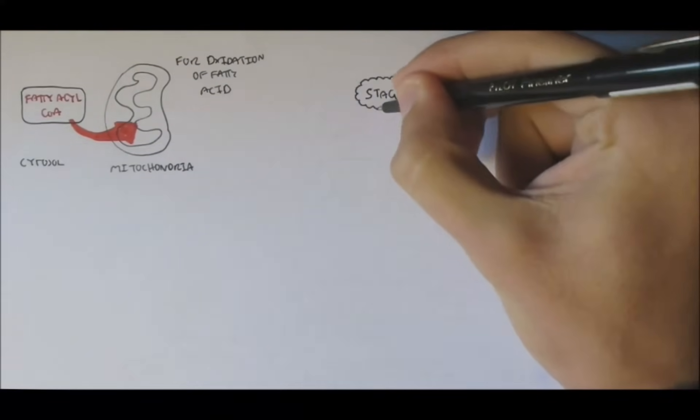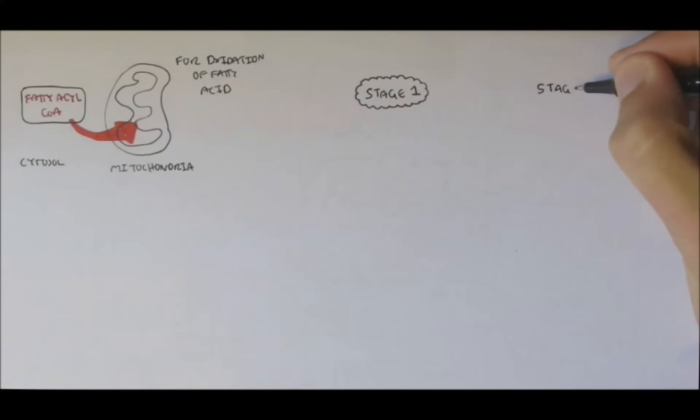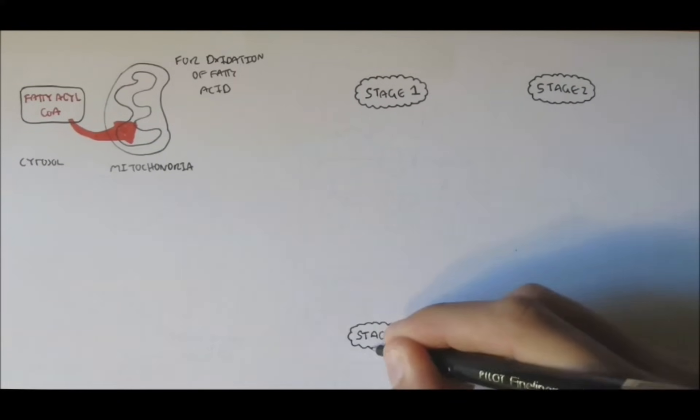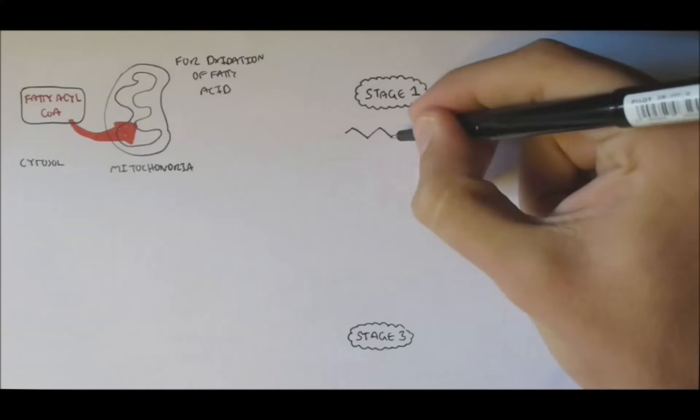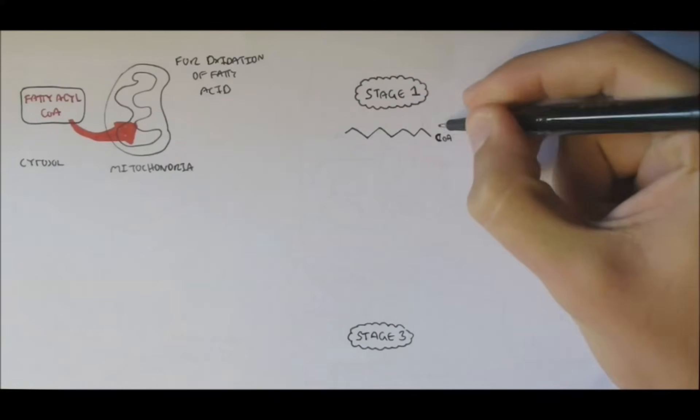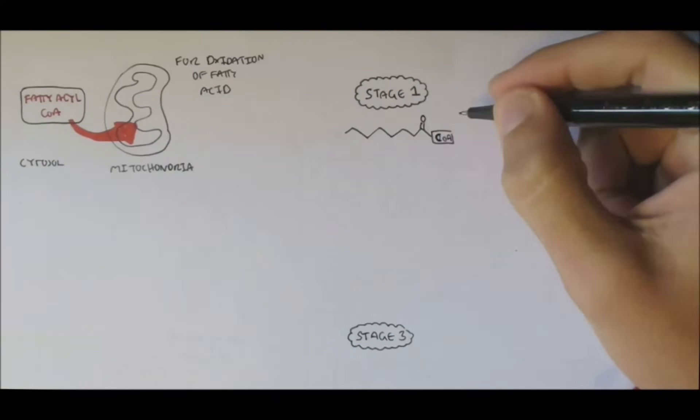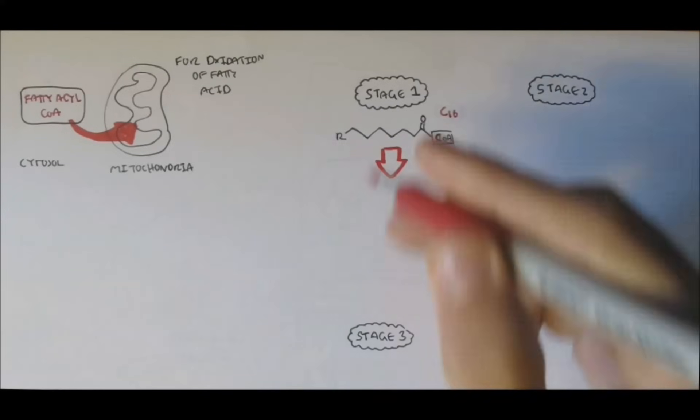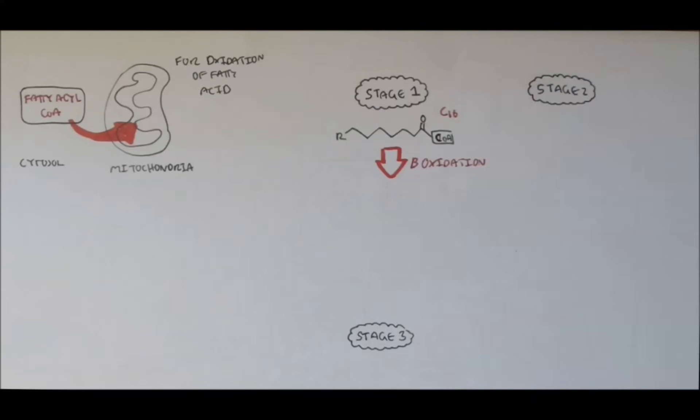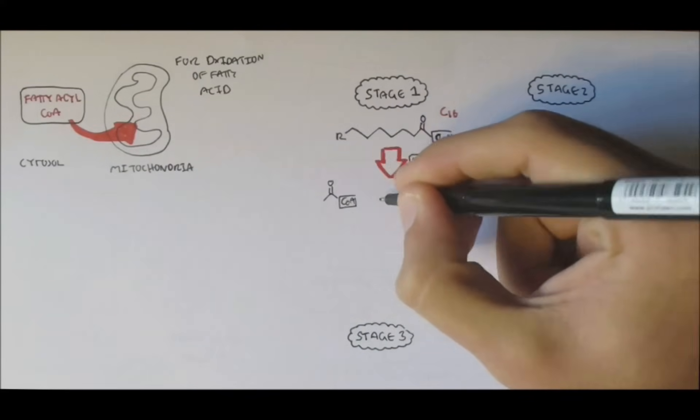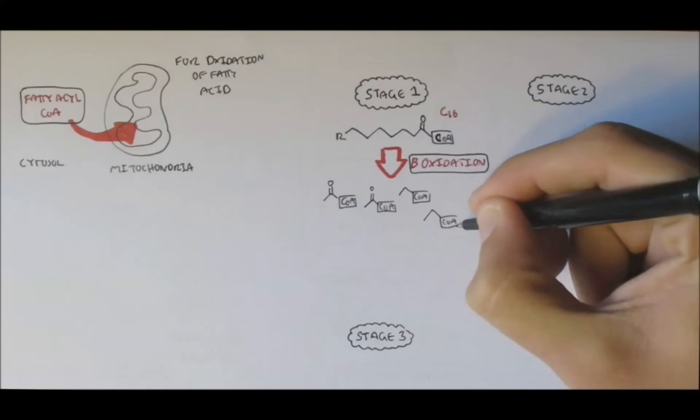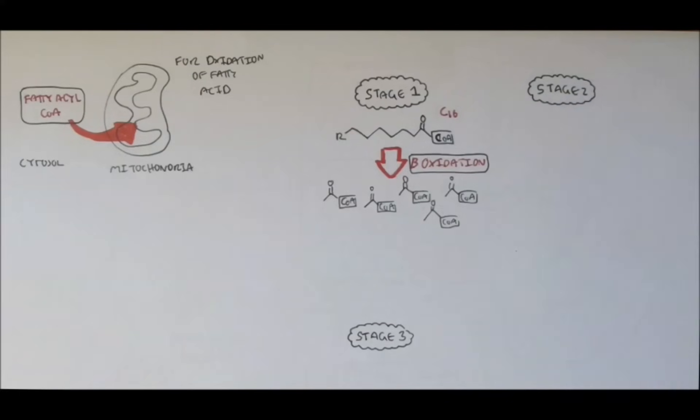Fatty acid degradation, or full oxidation, comes in three stages. Stage 1 is when a long fatty acid chain, a long fatty acyl-CoA, such as palmitoyl-CoA, a 16-carbon fatty acid, can undergo beta-oxidation, which will essentially cleave two carbons at a time from the long-chain fatty acid. So palmitoyl-CoA, through beta-oxidation, will make 8 acetyl-CoAs.